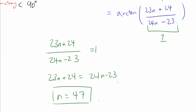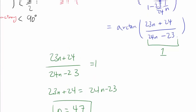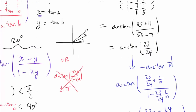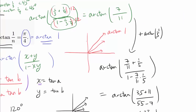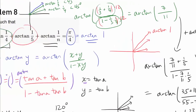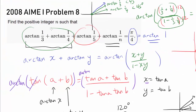So we've arrived at the answer: n = 47. This was a fun problem to work through step by step. The positive integer n is 47, or written with the leading zero for the competition format: 047.